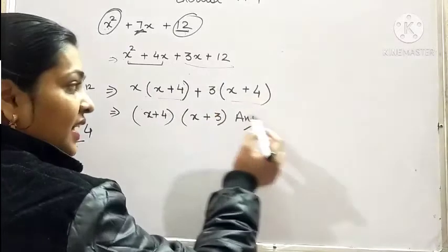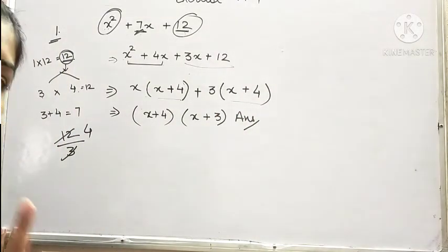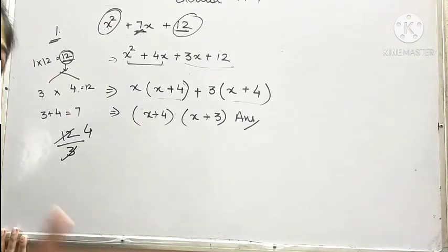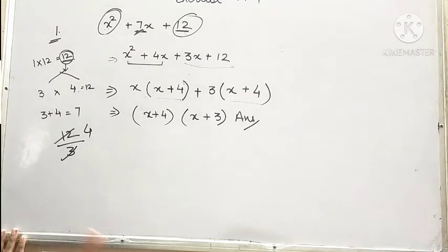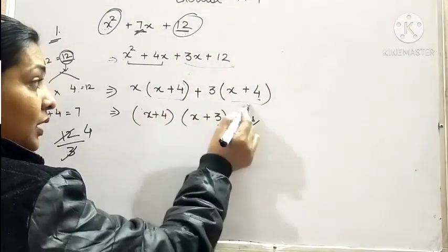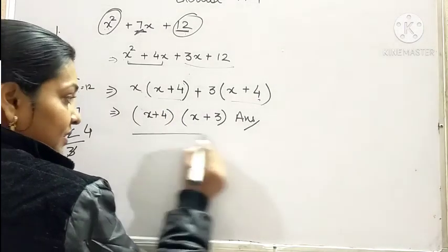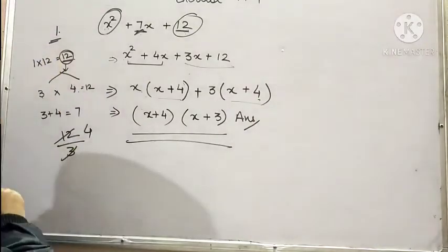If you are not obtaining the same term within the bracket, that means you have committed some error. So you have to take care of that. So x plus 4 is common in both the terms. We take out x plus 4 as common. What is left? x plus 3. This is the required answer.